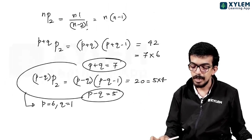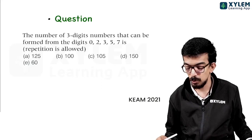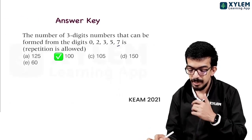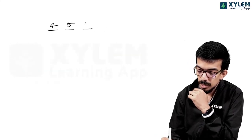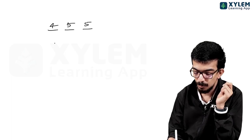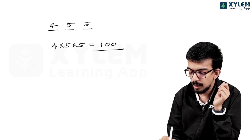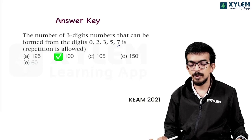Next question. The number of three-digit numbers that can be formed from the digits 0, 2, 3, 5, 7 where repetition is allowed. For the hundreds place, zero cannot be used so there are 4 choices. For the tens and units places, there are 5 choices each. By the fundamental principle of counting (multiplication principle): 4 into 5 into 5.